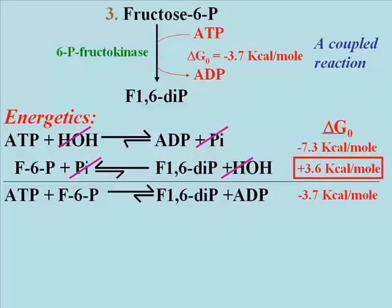Since the hydrolysis of ATP is exergonic generating minus 7.3 kilocalories per mole, we can calculate the standard free energy change for the phosphorylation of fructose 6-phosphate to be plus 3.6 kilocalories per mole.